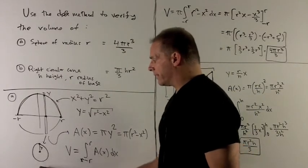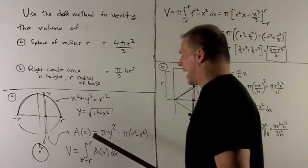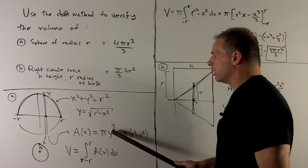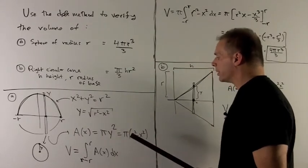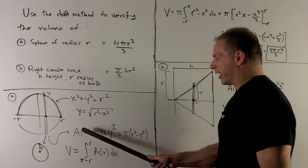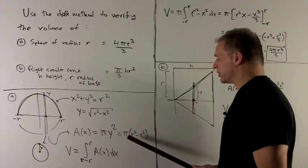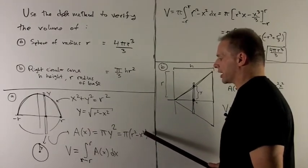So the area of this disk is going to be given by pi y-squared, but y equals square root of r-squared minus x-squared. So the area of the disk at x is going to be pi times r-squared minus x-squared.